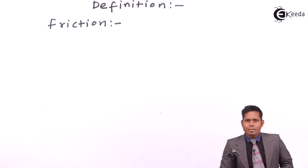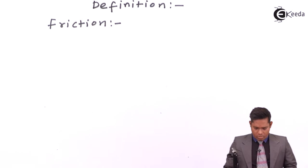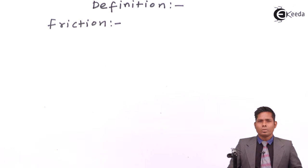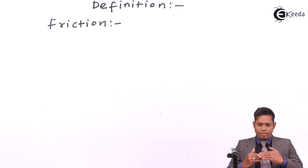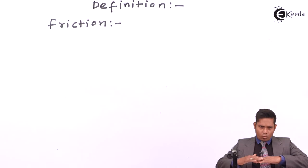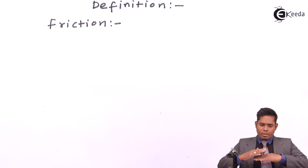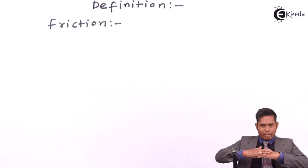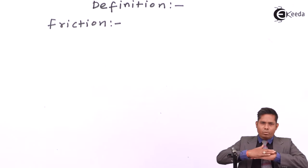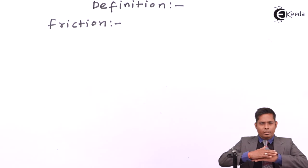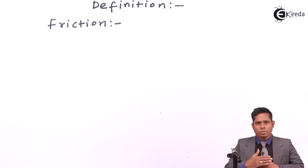Friction is basically a force that opposes the relative motion between two bodies in motion — two bodies which are sliding one over the other. That means when one body slides over another body, there should be a physical contact. When one body moves over the other body, friction acts. Friction is an opposing force which tries to oppose the relative motion.